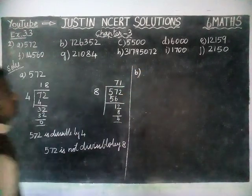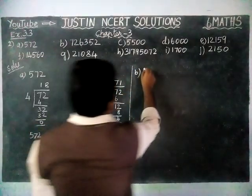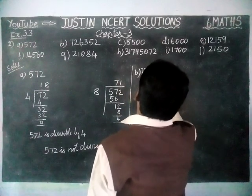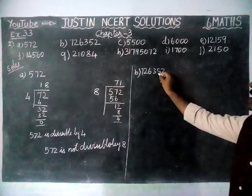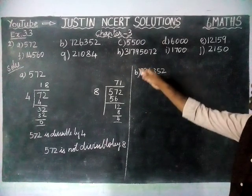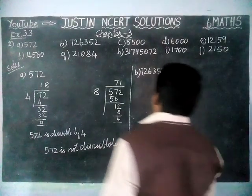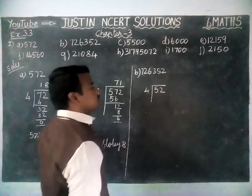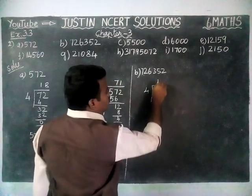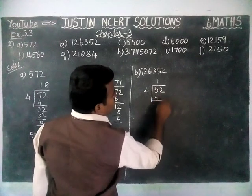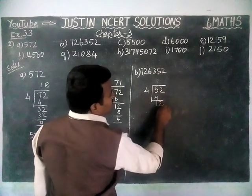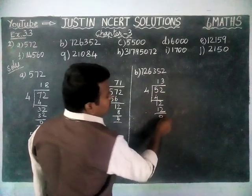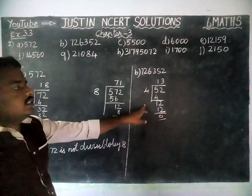Next we are going to solve option B. According to the divisibility test, if the last 2 digits are divisible by 4, that number is divisible by 4. The last 2 digits are 52. Dividing 52 by 4: 1 four is 4, remaining 1, bringing down 2 gives 12. 3 fours are 12, remaining 0. So this number is divisible by 4.